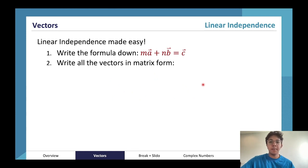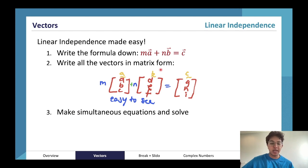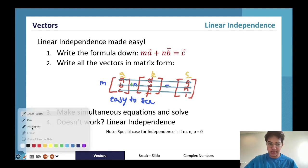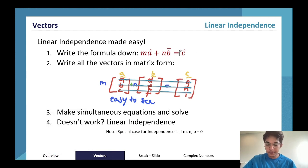If two things are linearly dependent, there exists a value for m and n. If they're independent, there doesn't exist a value for m and n. P refers to the term in front of c. Usually we can just set p equal to one, and then it doesn't matter anymore. Pretty nifty.